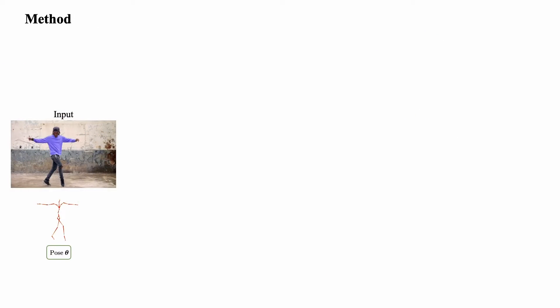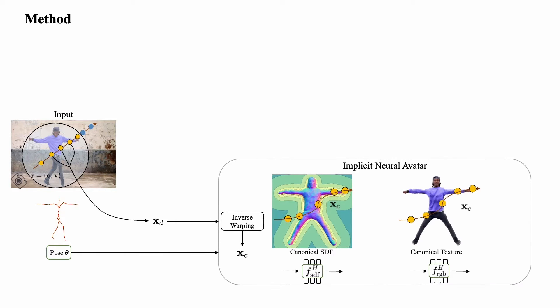Taking RGB video and pose initialization as input, we apply a coarse-defined sampling strategy and sample points outside and inside of a spherical inner volume. Samples X, D from the inner volume are warped into a temporally consistent canonical space, which contains the human, parameterized by SDF and texture networks. In this space, we leverage the evolving canonical SDF for surface-guided sampling.